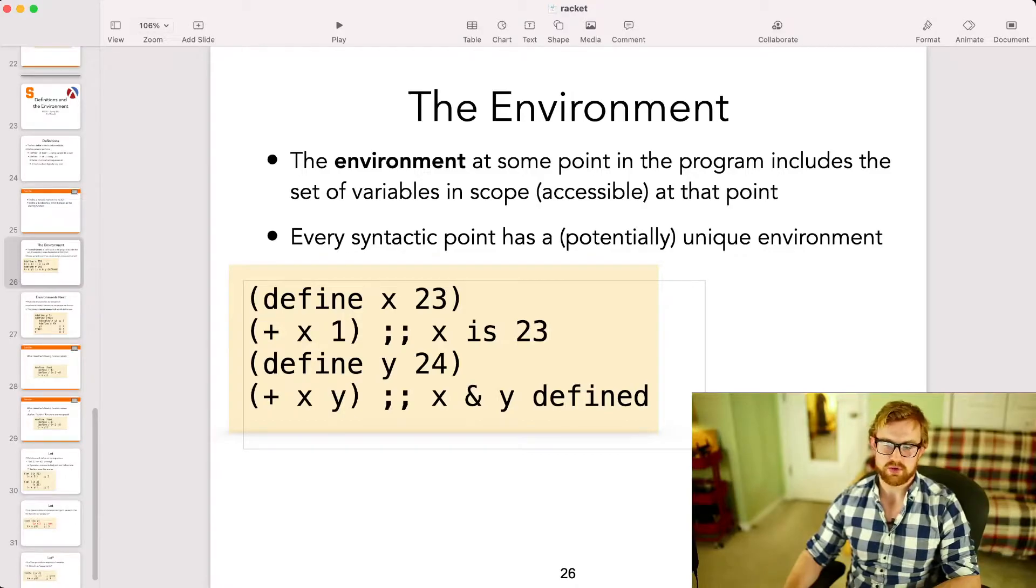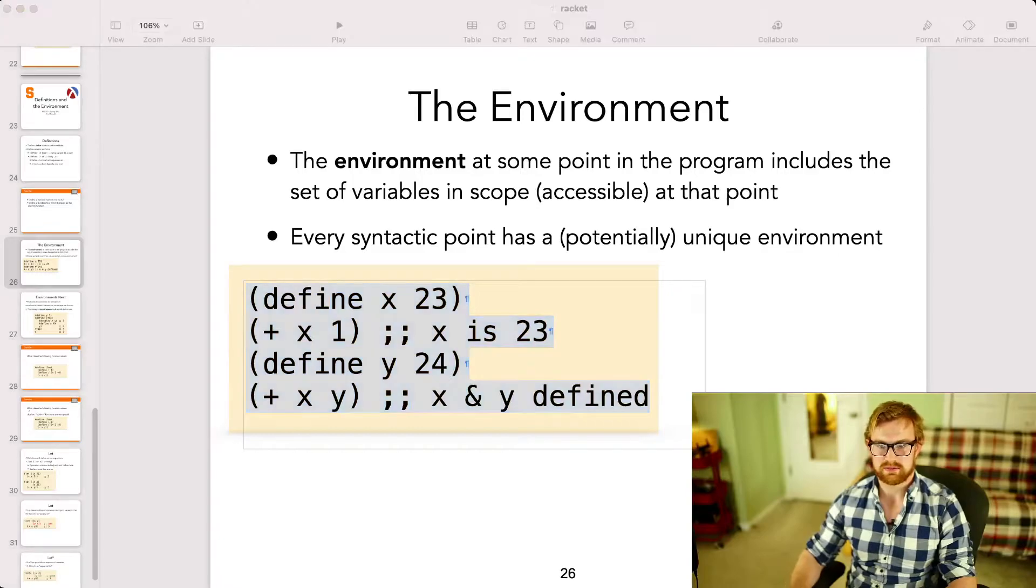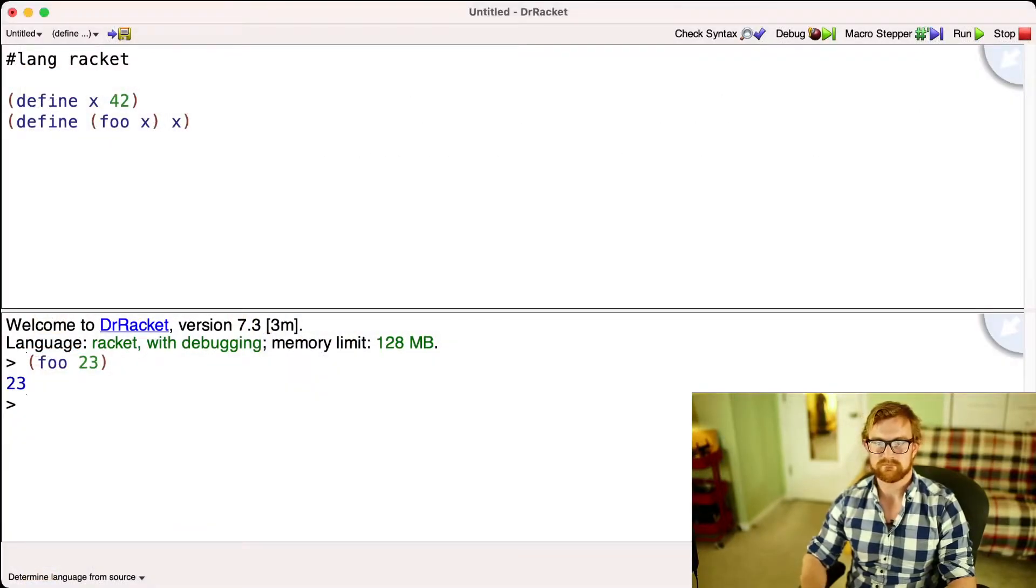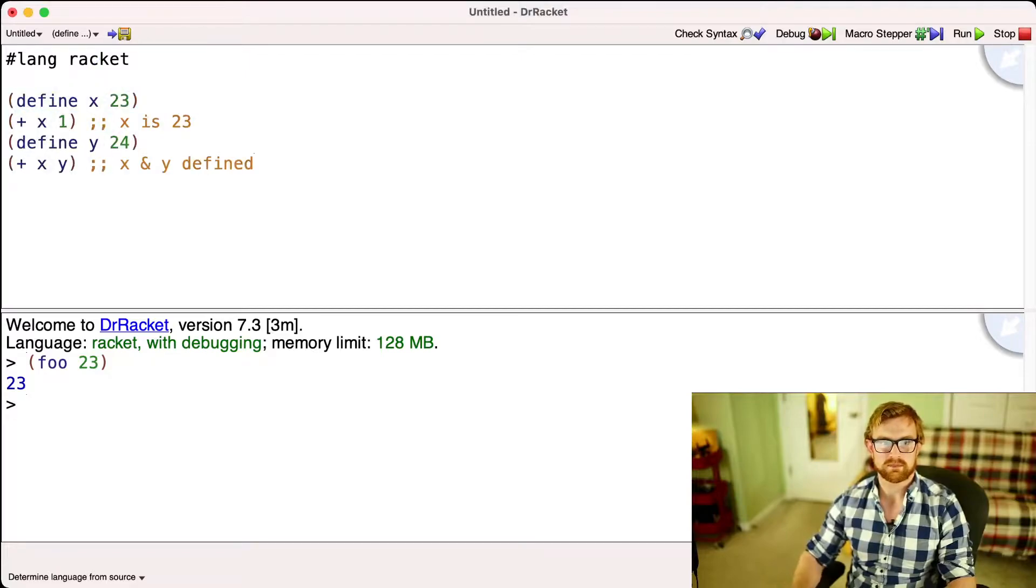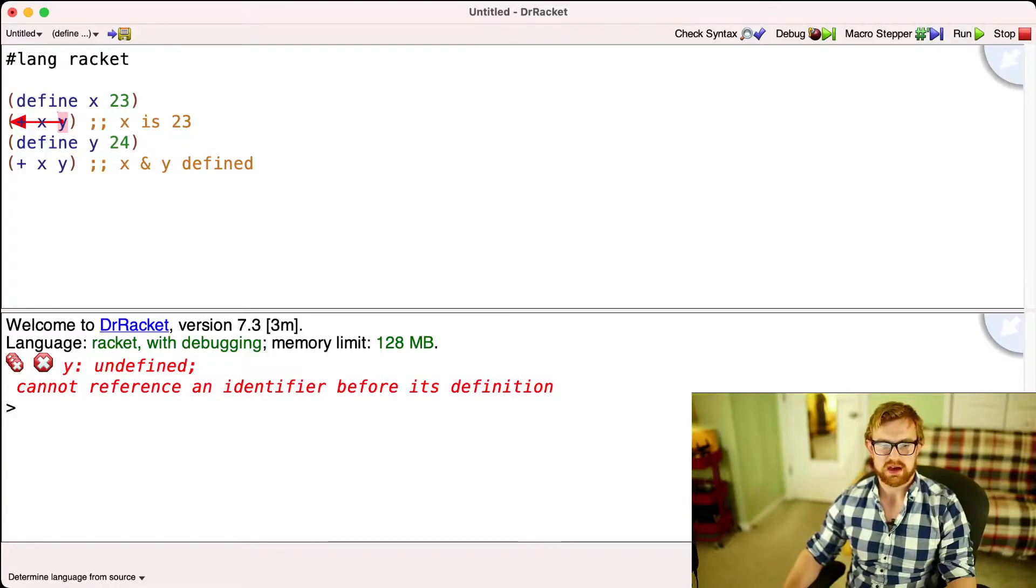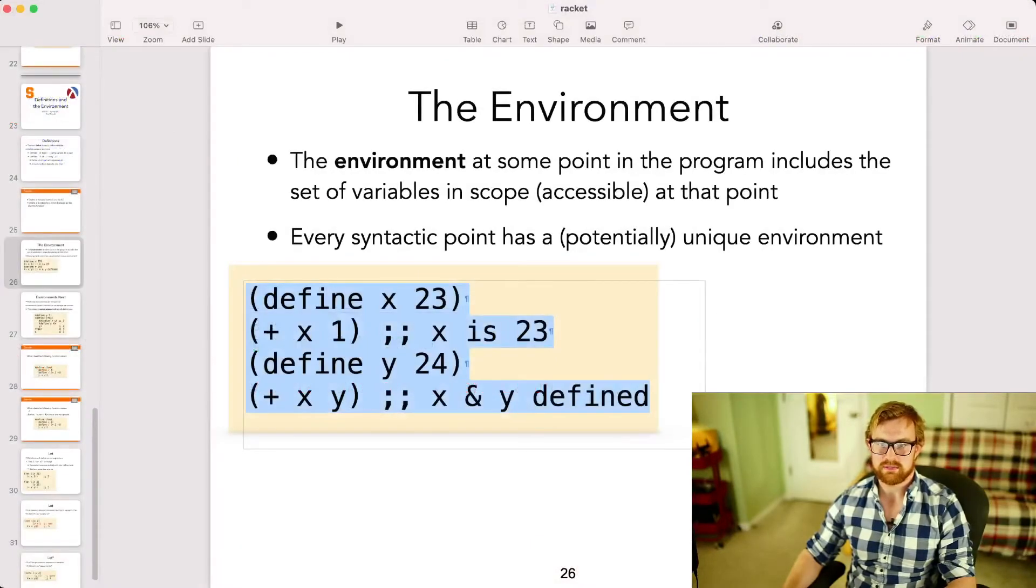However, there's no definition for y at this point in the program. And so if I tried to use the variable y right here, I would run into a problem. Let's just copy and paste this into Racket. So if I try to use this result right here, I'll see an error. It'll say, y is undefined. I can't reference an identifier before its definition. And that's because there are two separate environments for the two different parts of the program, the two different lines of the program that I end up on.